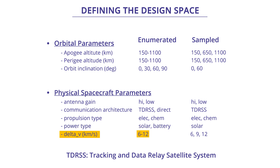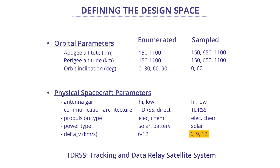We then sample this: high and low for antenna gain; TDRS only for communication architecture; electric and chemical for propulsion type; solar only for power type; and three discrete levels for delta-V — 6, 9, and 12. In this way, our sampling has picked out a reduced set from the full enumerated trade space.